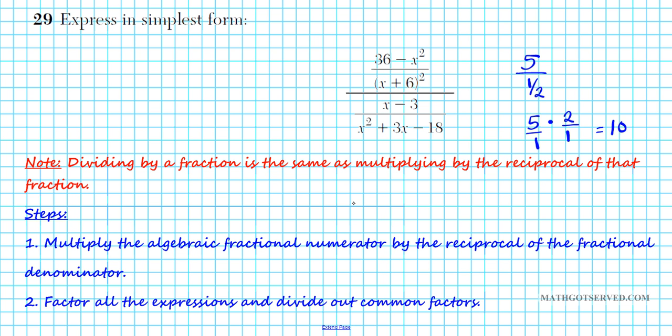Now the steps we're going to use for this problem. First of all, we're going to multiply the algebraic fractional numerator by the reciprocal of the denominator because we are dividing by an algebraic fraction here. So we're going to use this idea, but applying it to an algebraic situation. So we're going to multiply the numerator by the reciprocal of the denominator. Just reciprocate that: top, bottom, top, bottom. And then in step two, we'll factor out all our expressions and we'll divide out common factors.